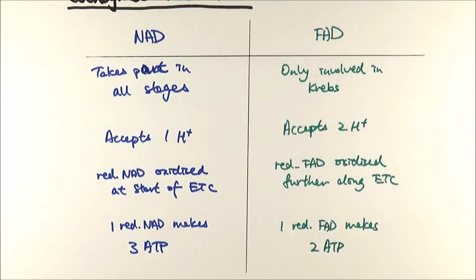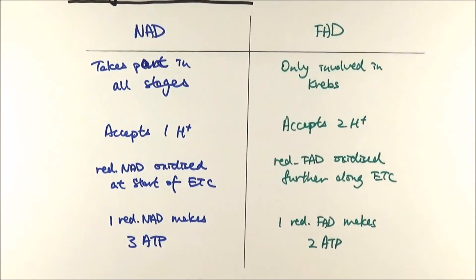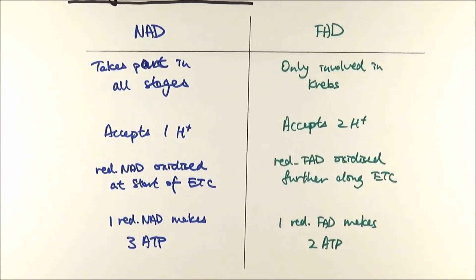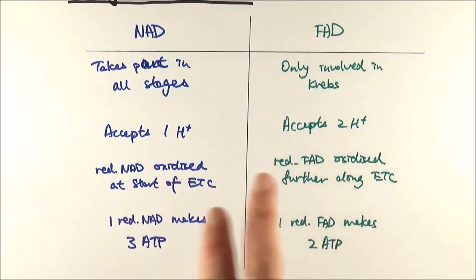Having said that, I really recommend that everyone uses the term 'reduced NAD' or 'reduced FAD' rather than trying to use NADH or FADH2, because sometimes people forget how many protons they each accept and sometimes their charges will be different. To avoid making that mistake, it's probably better to use the term 'reduced coenzymes' rather than NADH or FADH2.